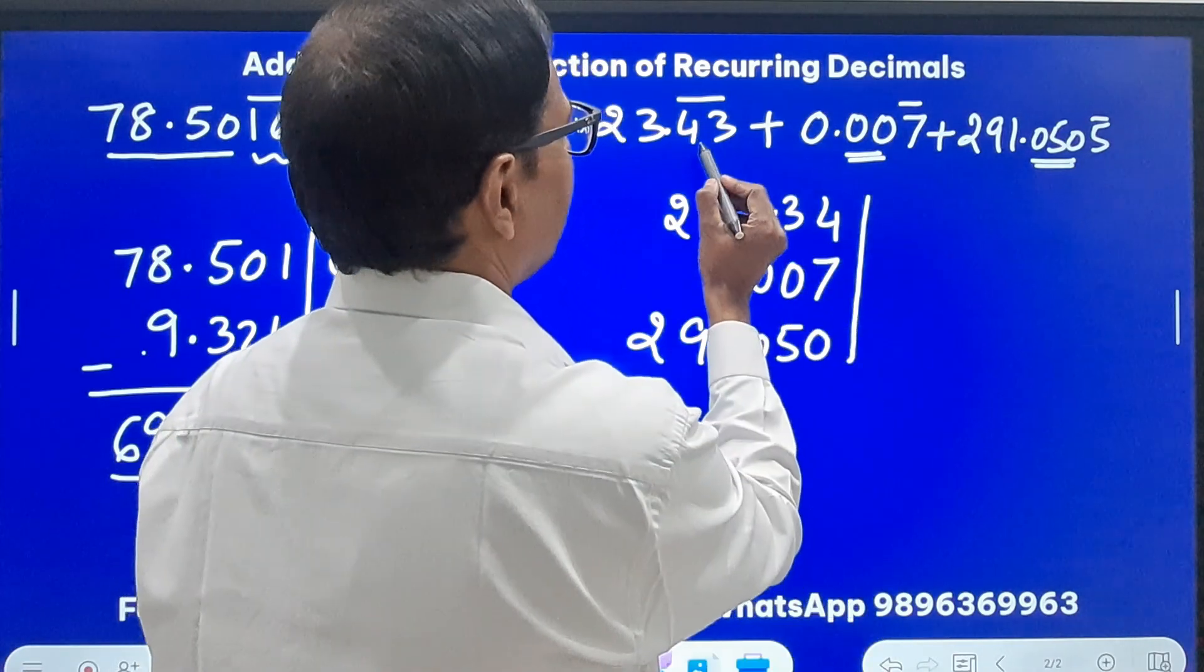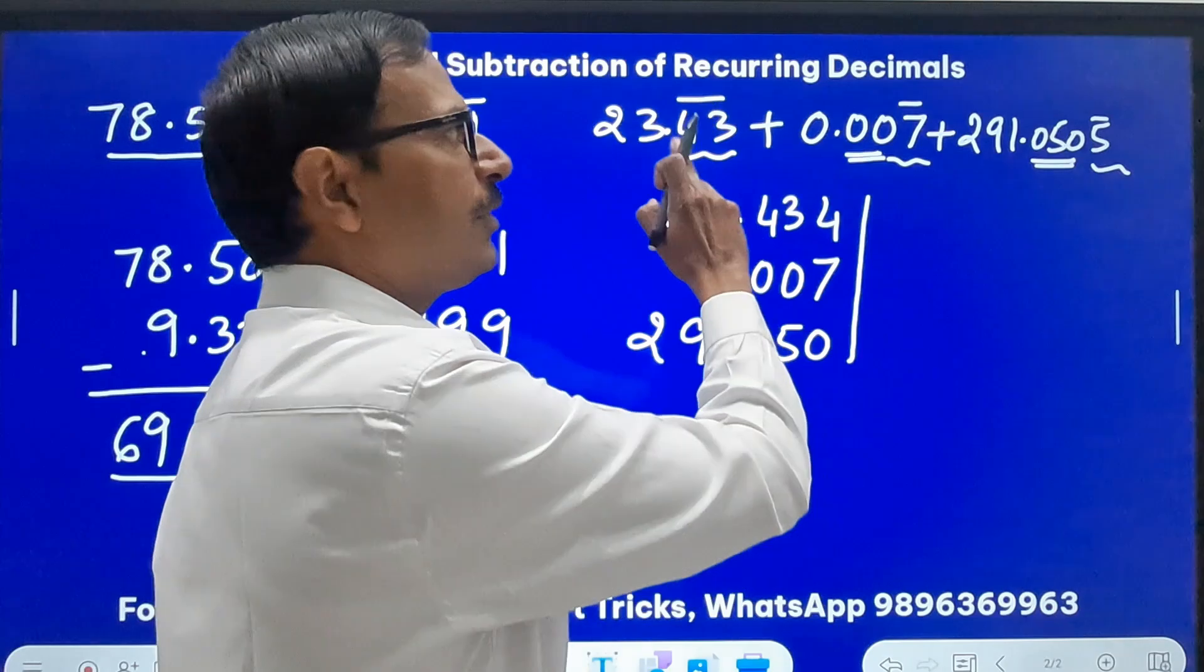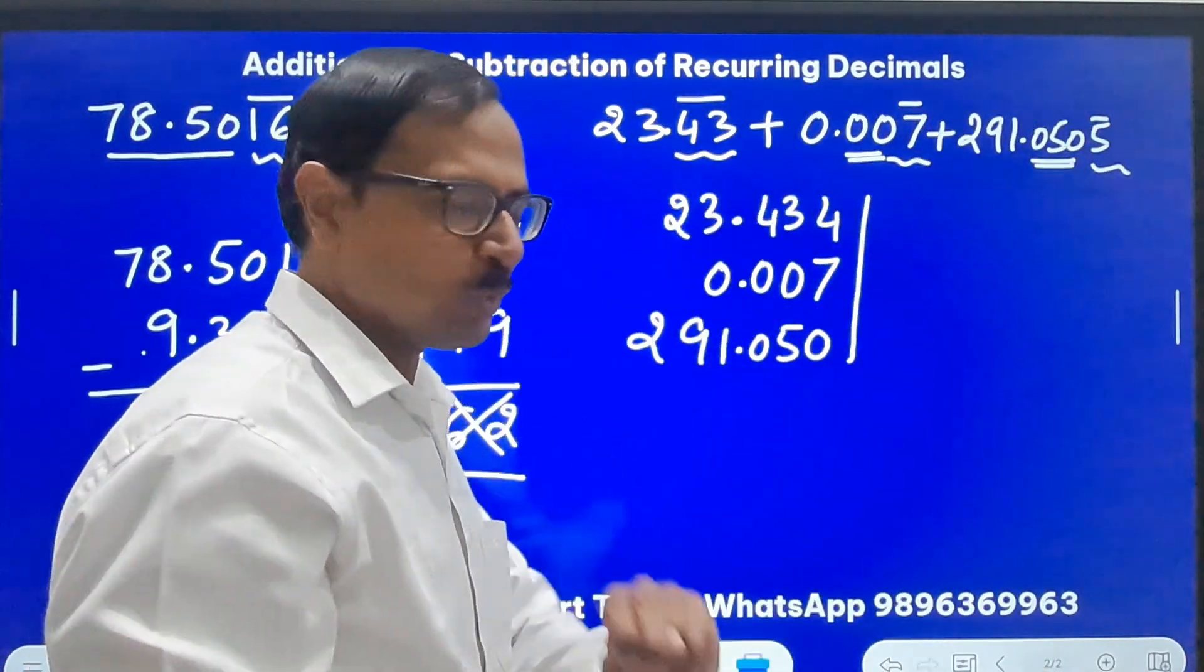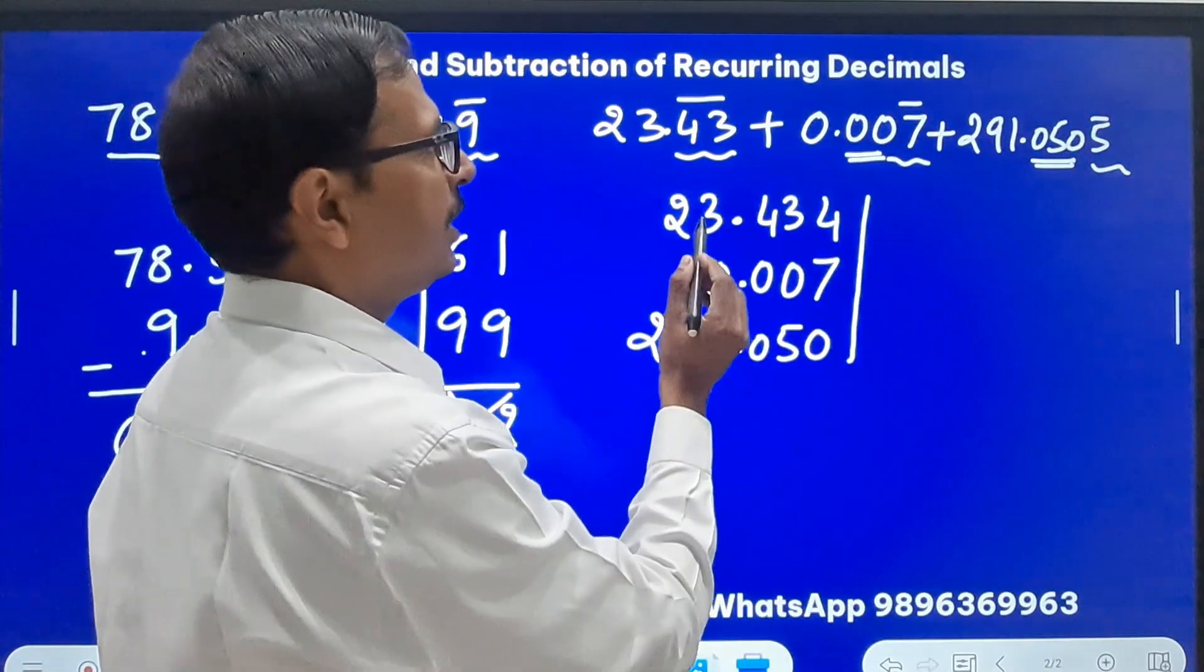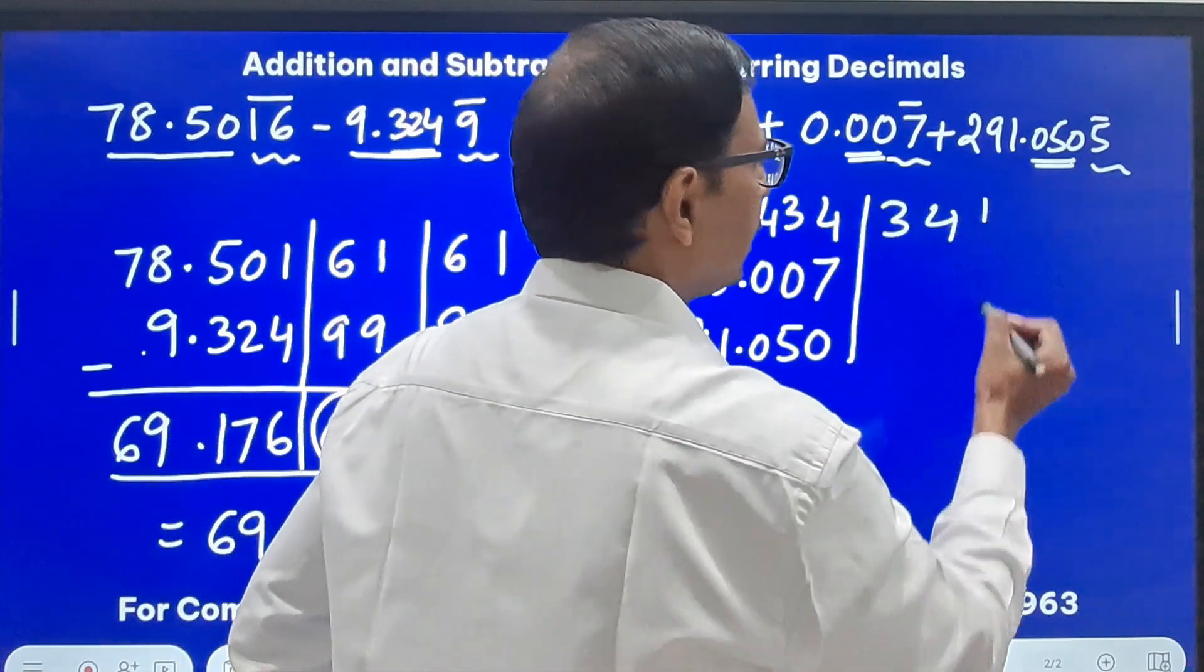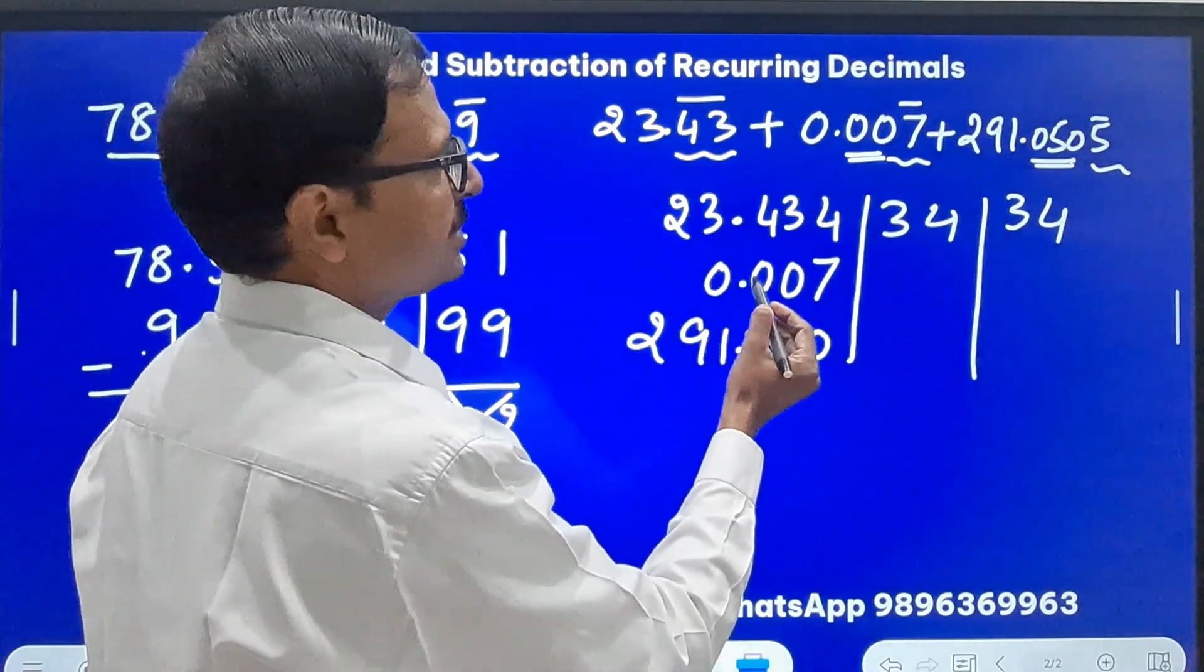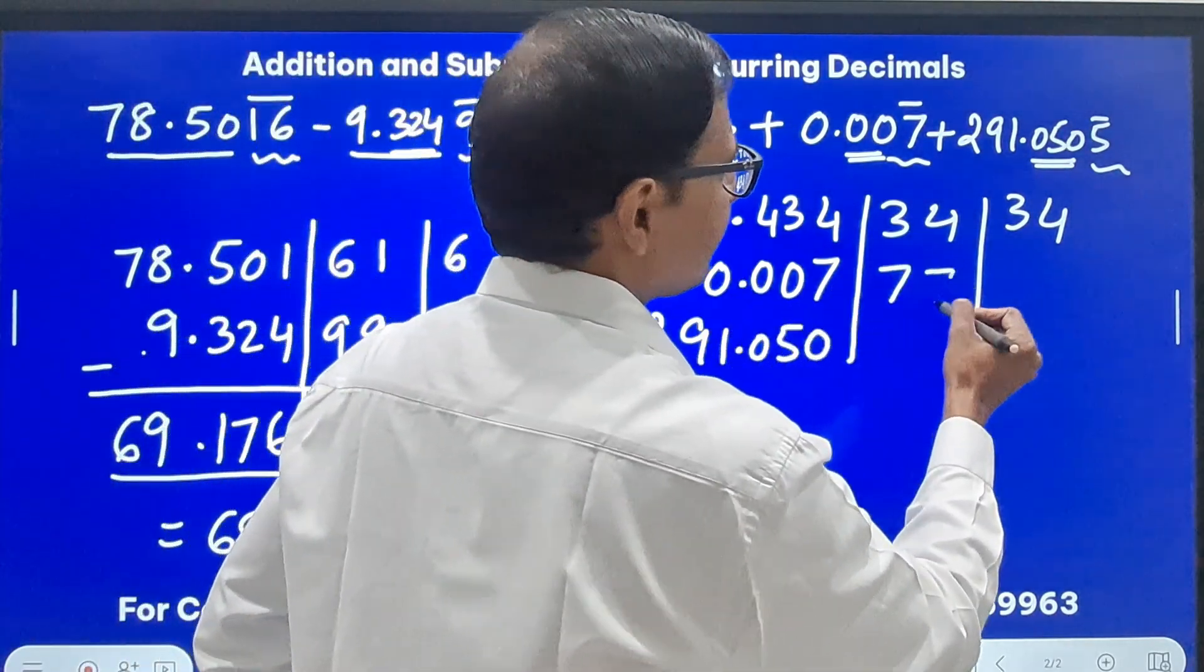And now I need to see how many digits should I write in the middle. Two recurring, one recurring and one recurring. So LCM of 2, 1, 1 is 2, so I'll write two digits in the middle. 23.43434, 0.007777, 291.05055.